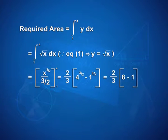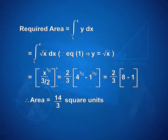That equals x^(3/2) / (3/2) with limits 1 and 4. On applying limits, we have (2/3) × (4^(3/2) − 1^(3/2)), which equals (2/3) × (8 − 1), giving us 14/3 square units as the area.